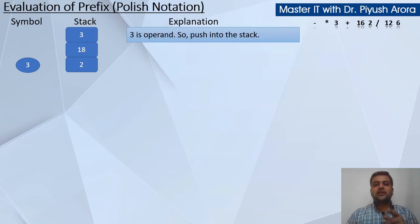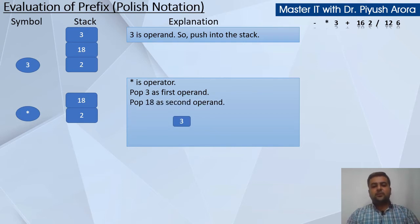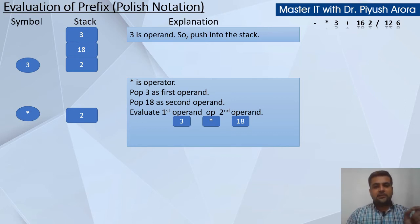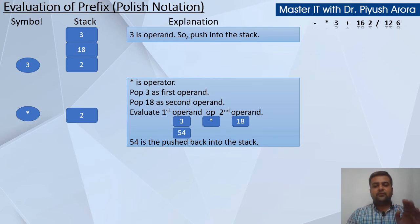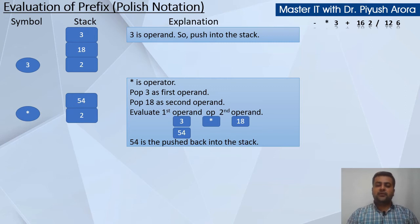Next value ko right side se scan karenge — multiplication hai. Stack ke andar 3 values pehle se hain. Multiplication is operator — now pop 3 as the first operand, pehle 3 ko stack mein se nikaaliye. Next pop 18 as the second operand. Op is multiplication, so 3 multiplication 18 — aur 18 multiplication 3 bhi same hai, fark nahi padta. It becomes 54, and 54 is pushed back into the stack. Stack mein pehle 2, 18, aur 3 tha — ab 3 multiplication 18 karne se new value 54 stack mein push ho gayi.